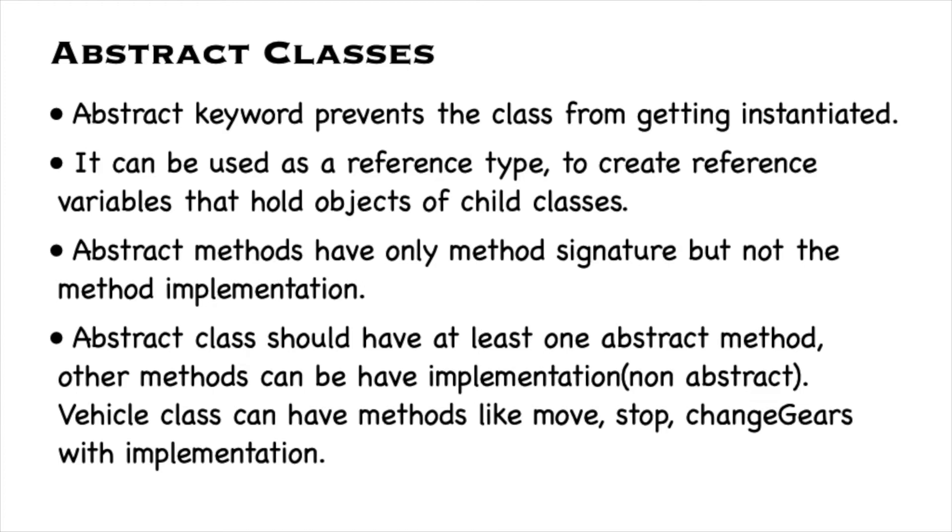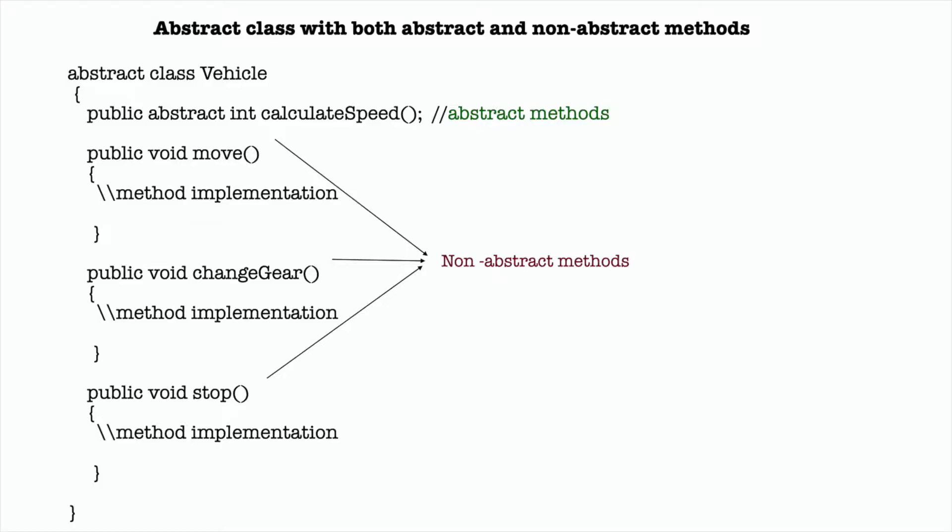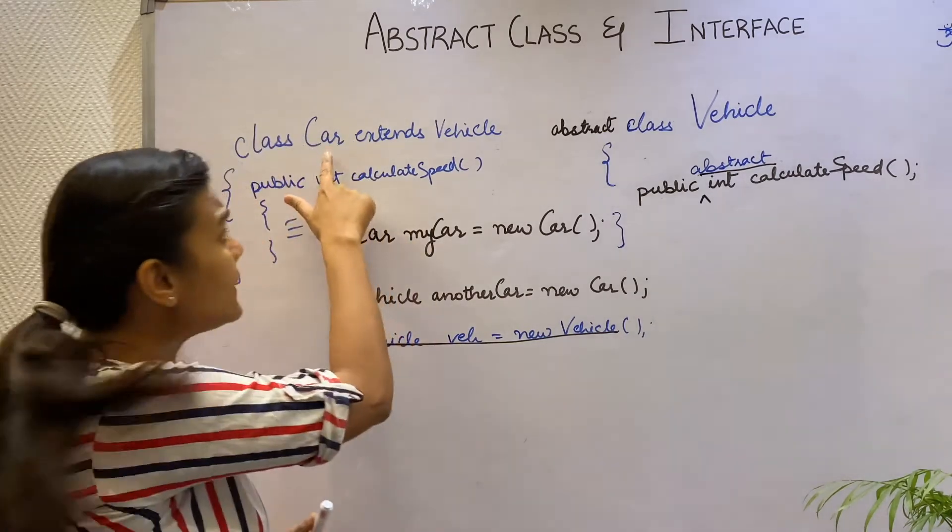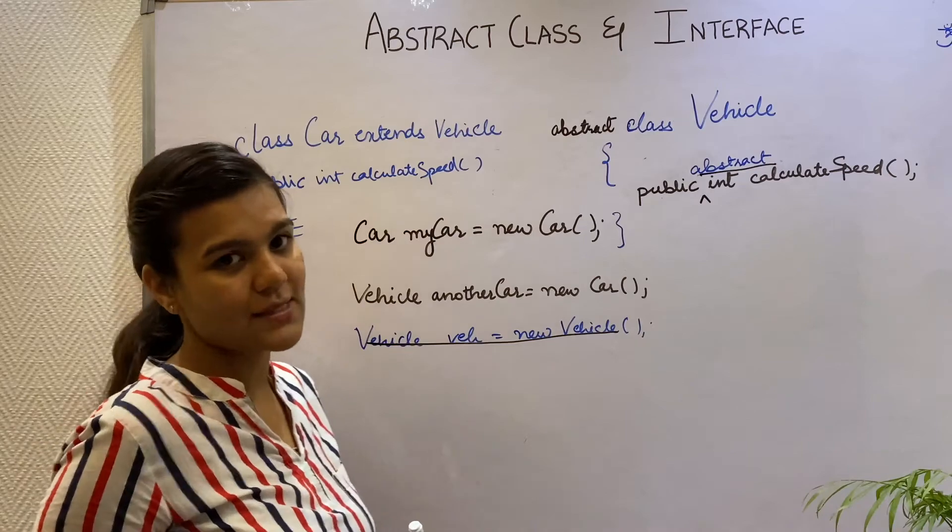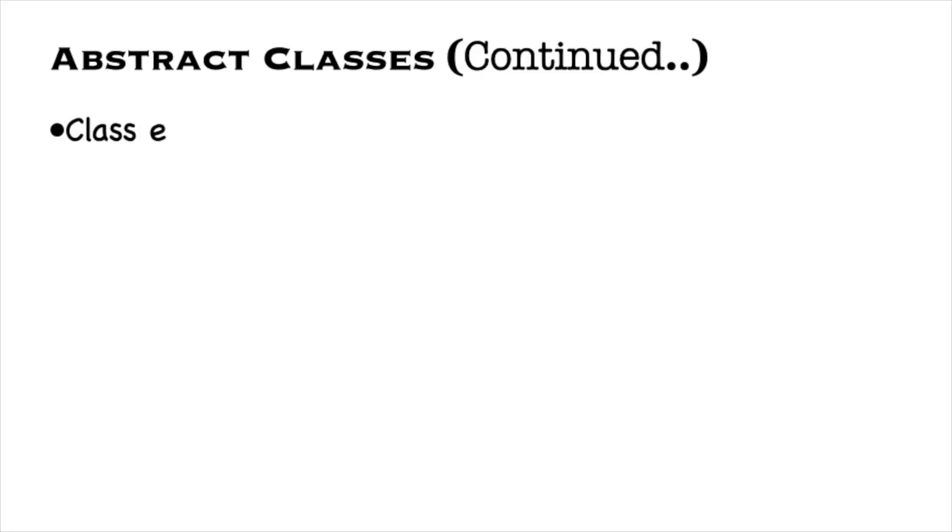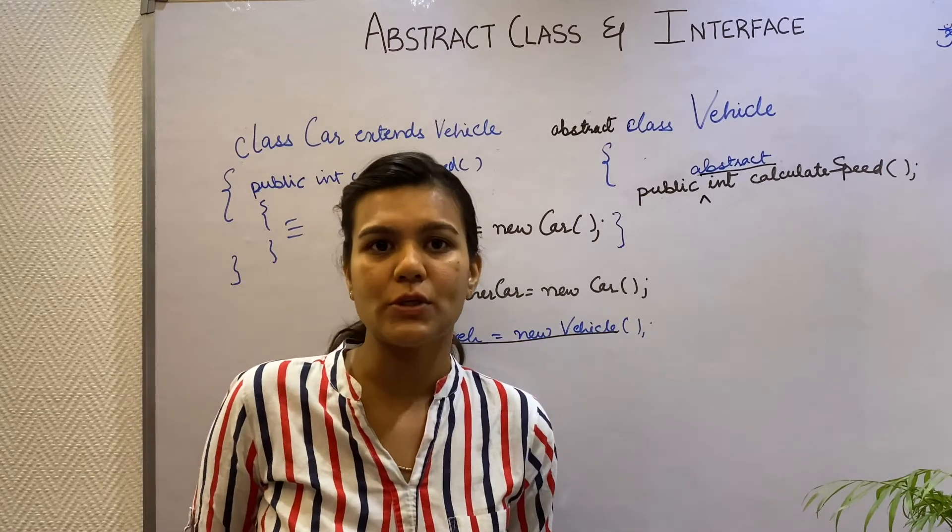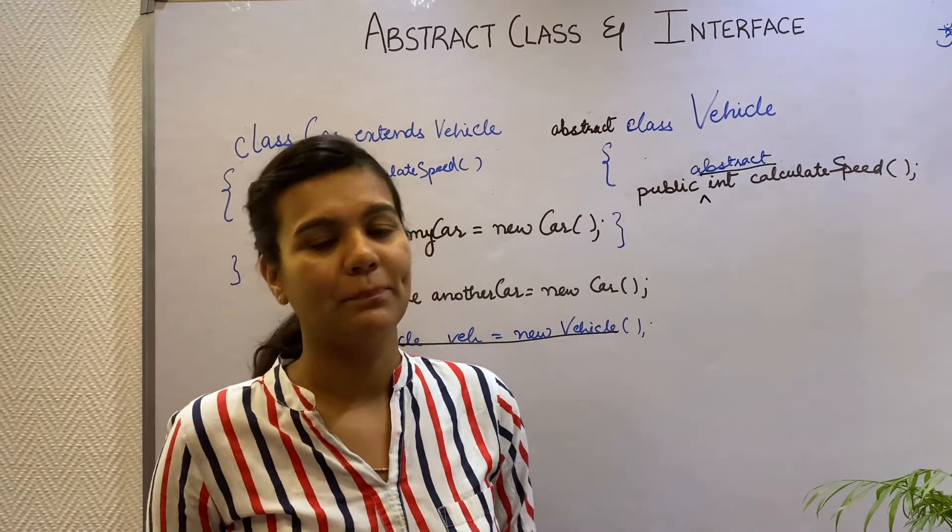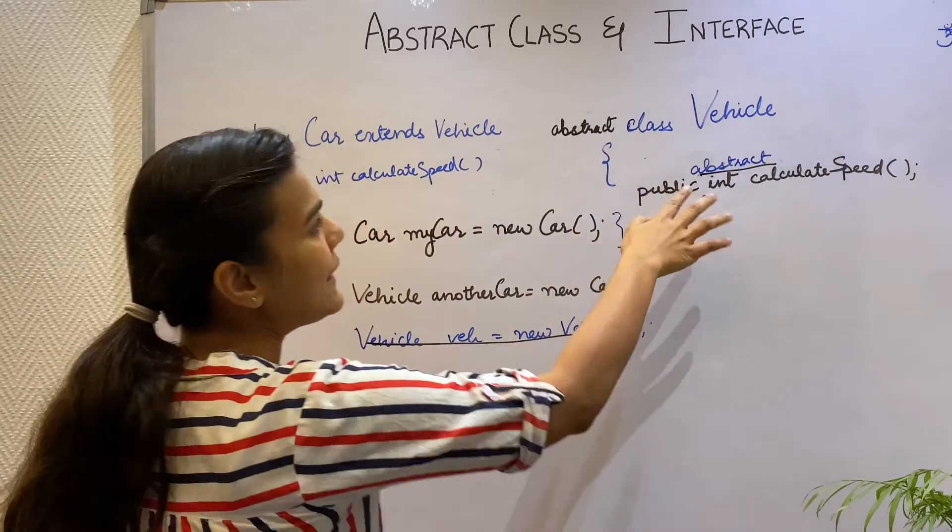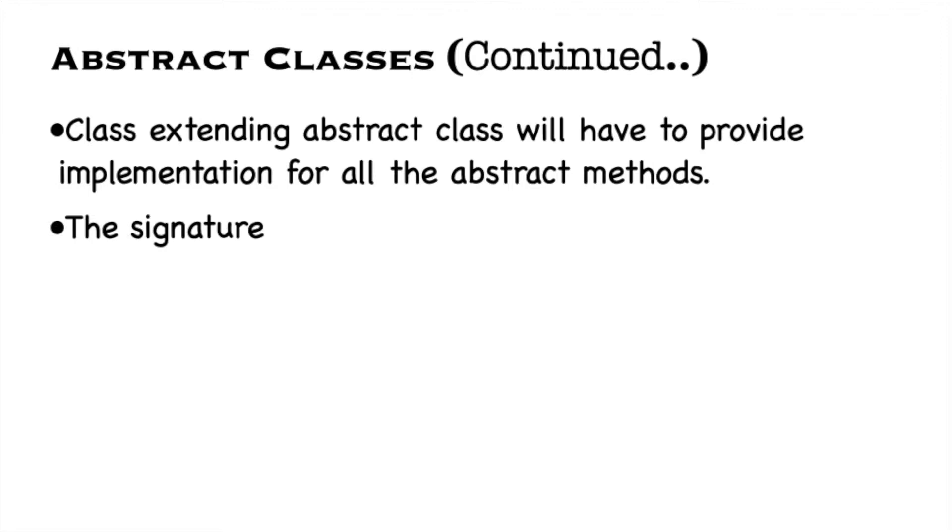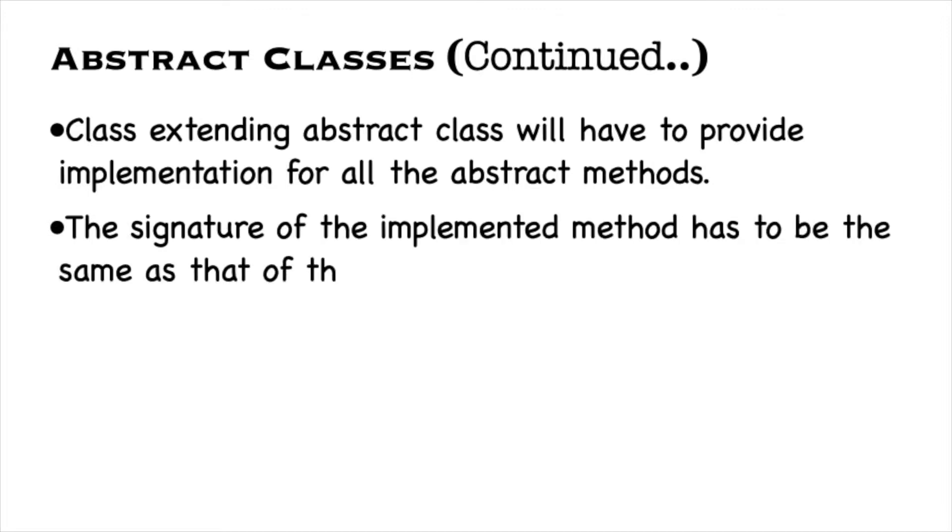Also an abstract class can have some non-abstract methods as well. There's another point here that if a Car is extending an abstract class, then it will have to provide the implementation for all the abstract methods. Providing an implementation is just like overriding. So you can say that in my calculate speed method in the Car class, the signature will remain the same as it is in the Vehicle class. The implementation can vary from each class.